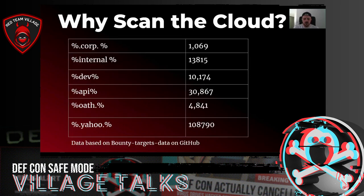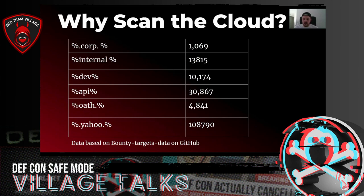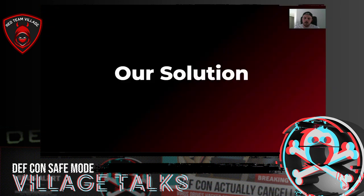Here's some quick data we grabbed from our database. When looking at roughly 1,000 corp domains, we found 13,000 internal domains. It's fascinating how many DNS names in the cloud have keywords like "internal," "corp," and "dev" — not what you'd initially expect to find publicly. Looking at API-related domains, a lot of cloud APIs are obvious. For specific targets like Yahoo or OAuth, you're looking at 100,000 to 4,000 targets all out there in the cloud.